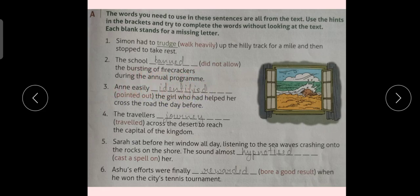Annie easily pointed out - the word will be identified. Annie easily identified the girl who had helped her cross the road the day before. The travelers traveled - the word will be journey. The travelers journey across the desert to reach the capital of the kingdom.